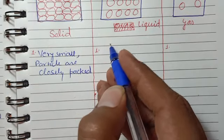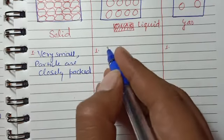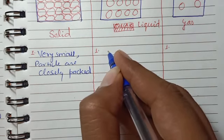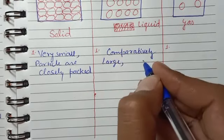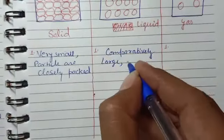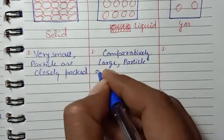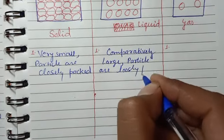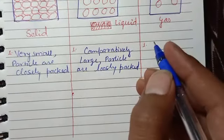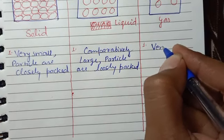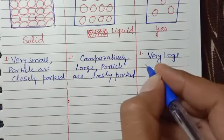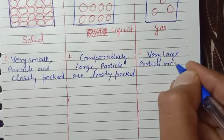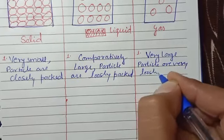In liquid state, inter-particle space is comparatively large and particles are loosely packed — there is a gap between them. In gaseous state, inter-particle space is very large; you can see one particle here and another far away. Particles are very loosely packed in the gaseous state.